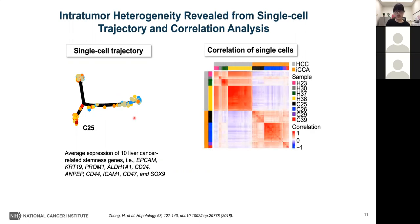I also studied intra-tumor heterogeneity using correlation analysis of all malignant cells. Each pixel in the heatmap represents the pairwise correlation of two malignant cells — red means high correlation and blue means low correlation. In some tumors, there is a relatively homogeneous tumor cell population where cells are very well correlated with each other. In others, there is a relatively heterogeneous tumor cell population with cells less likely to be correlated. These results indicate that the degree of intra-tumor heterogeneity varies among tumors.